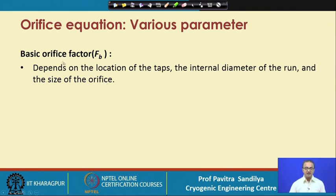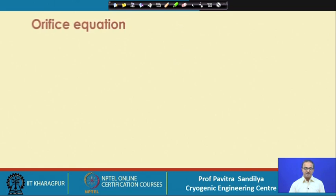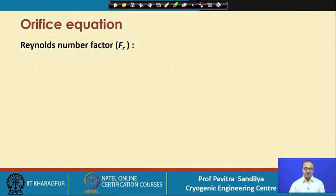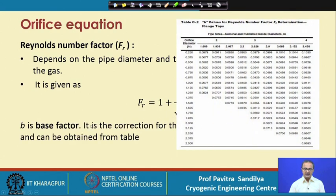The basic orifice factor depends on the location of the taps, the internal pipe diameter, and the size of the orifice, and is obtained from tables in the literature. The Reynolds number correction factor depends on pipe diameter, viscosity, density, and gas velocity, and is given by a particular expression where B is a base factor also obtained from tables in the literature.